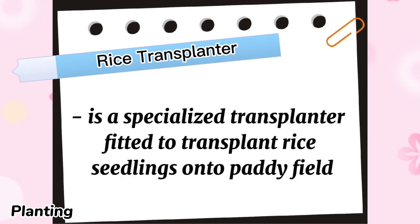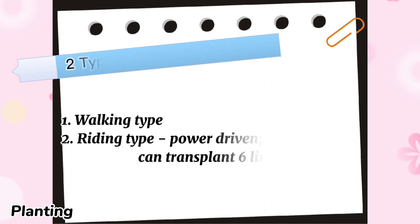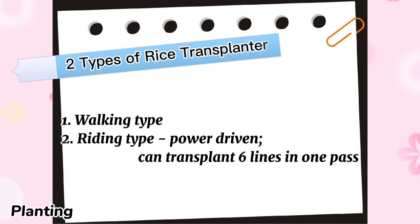Rice Transplanter is a specialized transplanter fitted to transplant rice seedlings onto a paddy field. There are two types of rice transplanter: the walking type and the riding type, which is power driven and can transplant six lines in one pass.